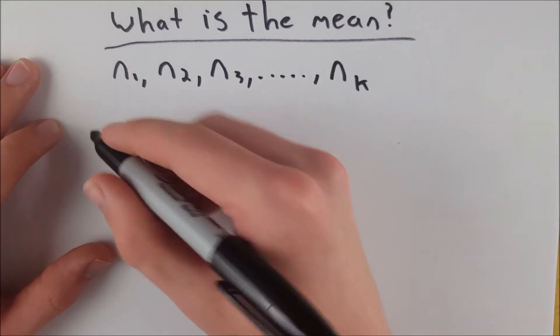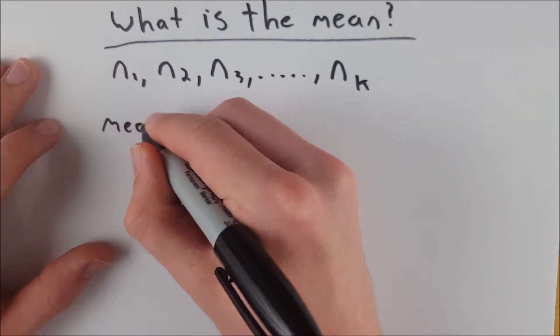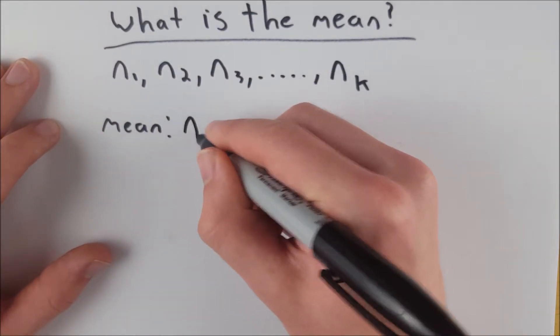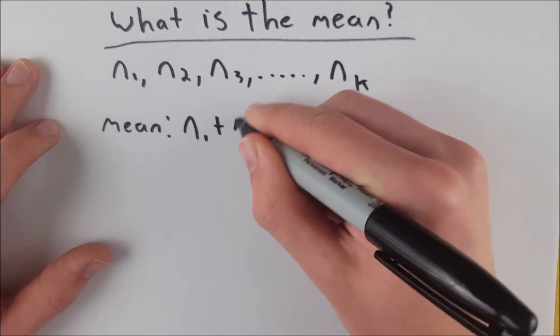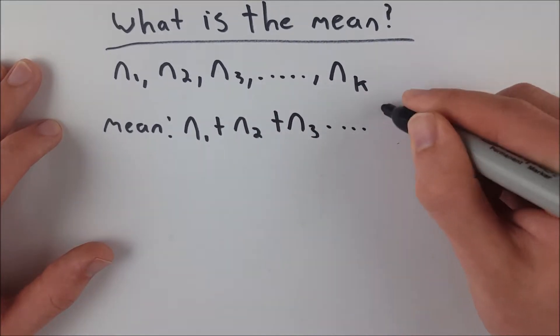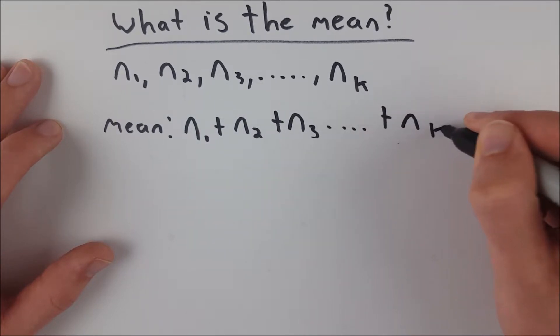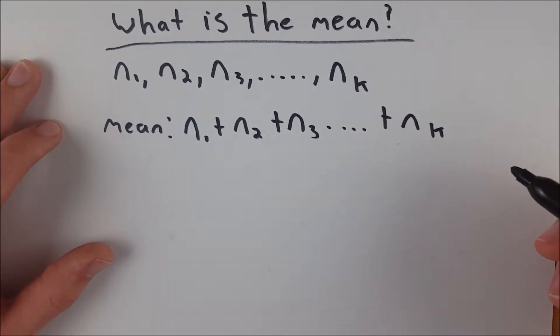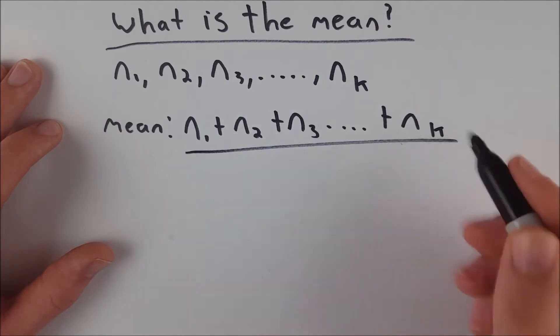So then, the mean, very simply, the mean is just your first data point, plus your second data point, plus your third data point, all the way up to adding your final data point. You add up all of your data points, and then you divide by k.